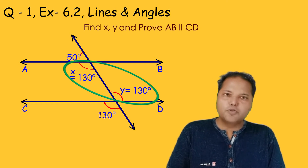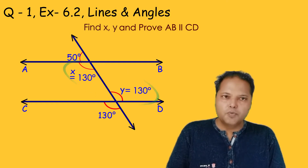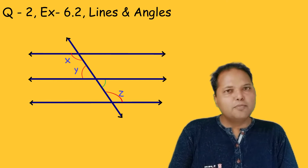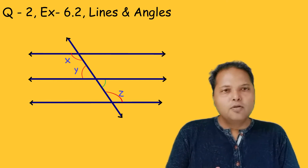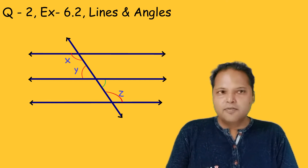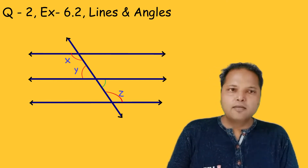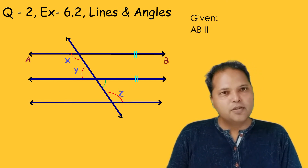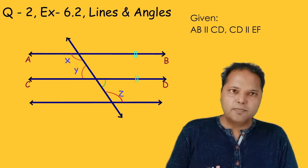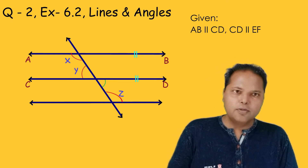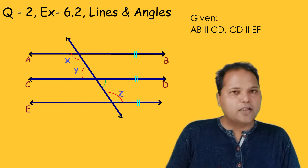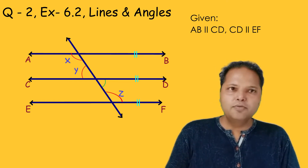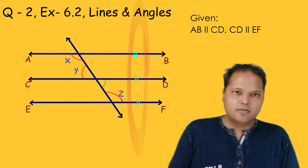Now let's move on to question number 2. In this figure, the given information is that line AB is parallel to CD, and CD is parallel to EF. So that means all three lines are parallel to each other.